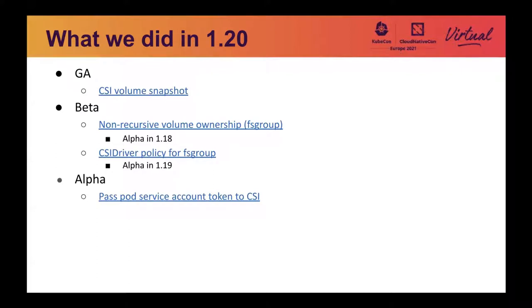Backup vendors are standardizing on CSI snapshot APIs to build their backup solutions. The CSI snapshot feature has Kubernetes volume snapshot CRDs, a snapshot controller, and a validation webhook. Those should be bundled and deployed by the Kubernetes cluster distro. There's also an external snapshot sidecar that is deployed together with the CSI driver.